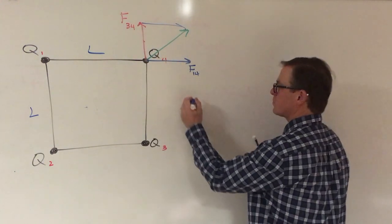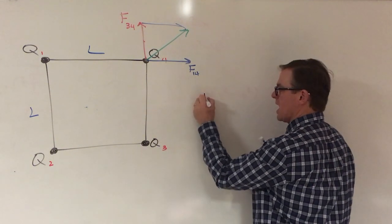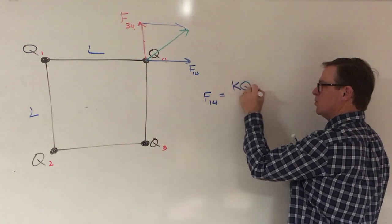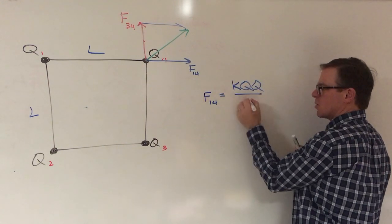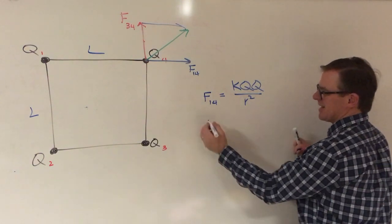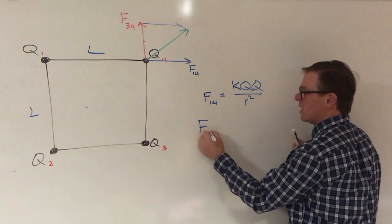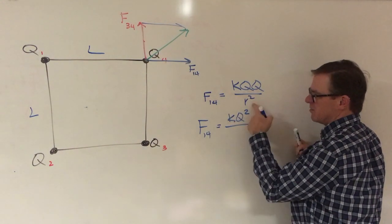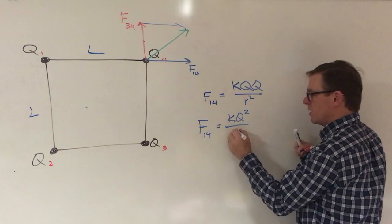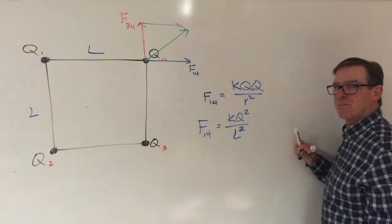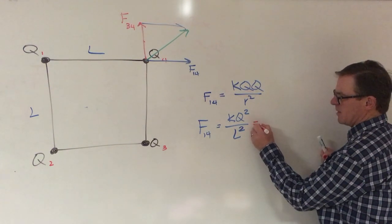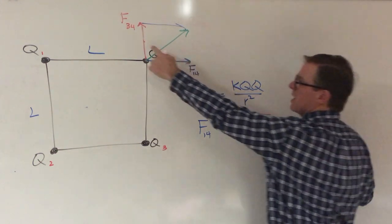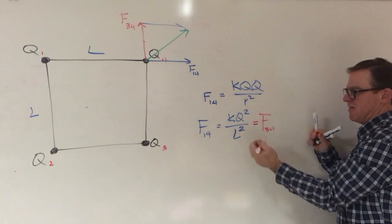Quickly, F14 equals KQQ over R squared. But in this case, the Q's are identical and so I can express this as KQ squared and the distance R is L, so I'm going to call that L squared. Likewise, this is the same as F34. So both the red vector and the blue vector have this value right here.